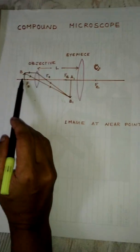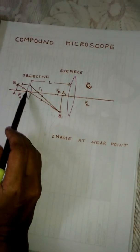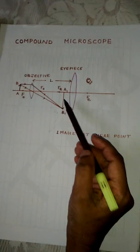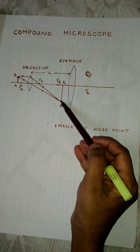The object AB is kept just beyond the focus of the objective. It forms a real, inverted, and magnified image A1B1.